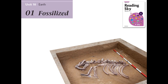Both imprints and molds are mirror images of the organisms. If a mold is later filled with minerals, the hardened filling is called a cast. Unlike an imprint, a cast is a replica with the same three-dimensional shape as the original organism.